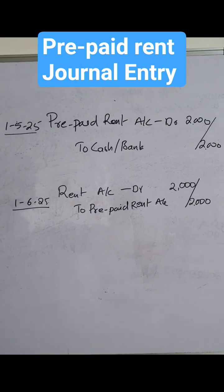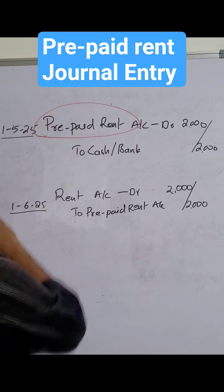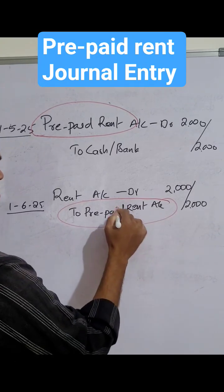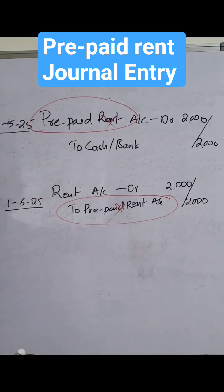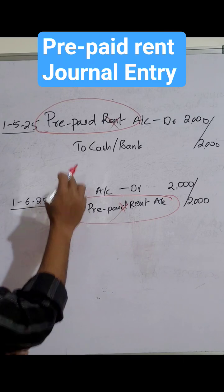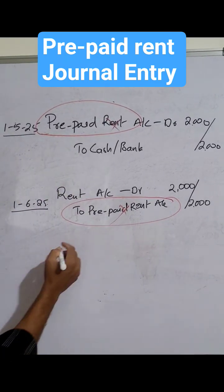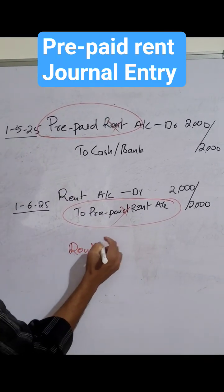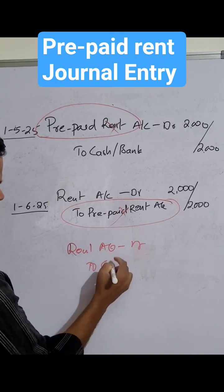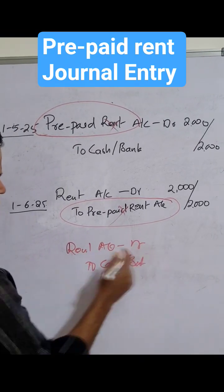In this, what is happening is: Prepaid Rent has been debited in the first entry and credited in the second entry. So these two entries will cancel each other out. What will remain is: Rent Account debit to Cash or Bank.